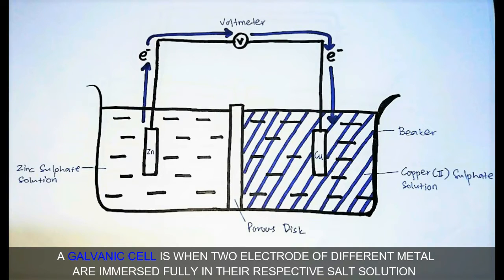A galvanic cell is when two electrodes of different metals are immersed fully in their respective salt solution.